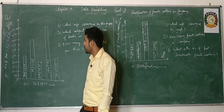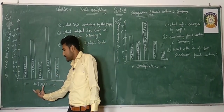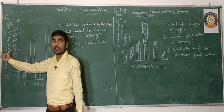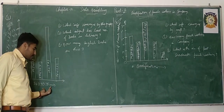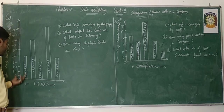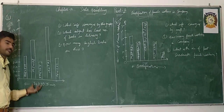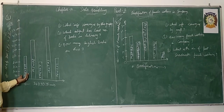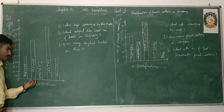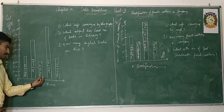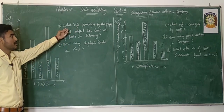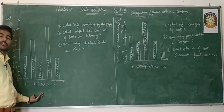Now proceed to question three. This graph tells us that it is about the number of books of different subjects in the library. For example, there are 250 English books, 400 Hindi books, and similarly books of biology, math, and Punjabi are there in the library. Proceed to question one: what information is conveyed by this graph? I have already told you that.